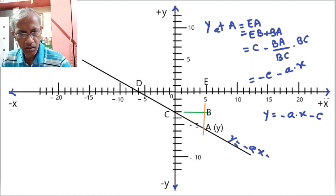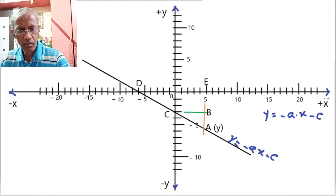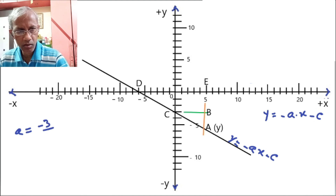So y is equal to minus a·x minus c. We will verify this over a certain value and check whether it is correct. The coefficient 'a' would be equal to perpendicular divided by base, which by the rule of similar triangles equals OC over BC. The similar side of BA is OC, which equals minus 3.